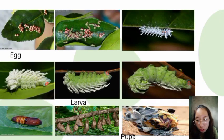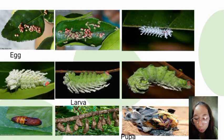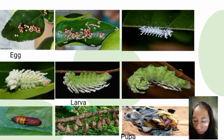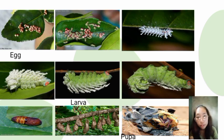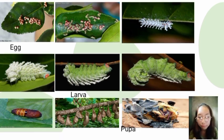Here we have pictures of the egg, the five larval instars (1 through 5), and the pupa — representing the first three stages of the life cycle.